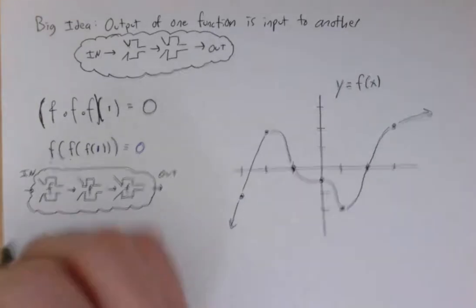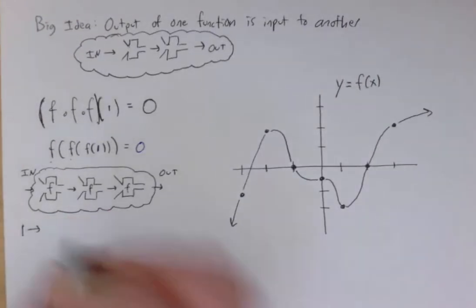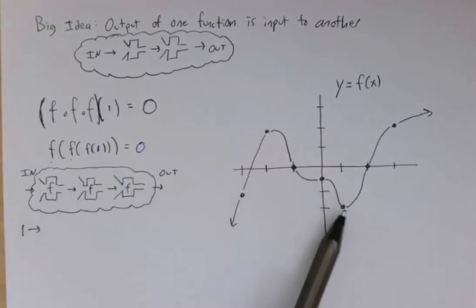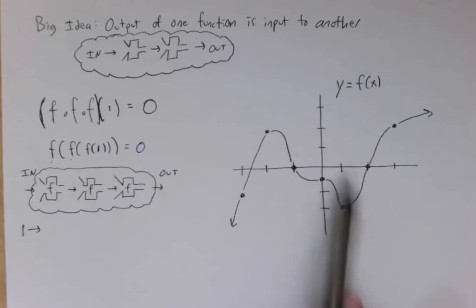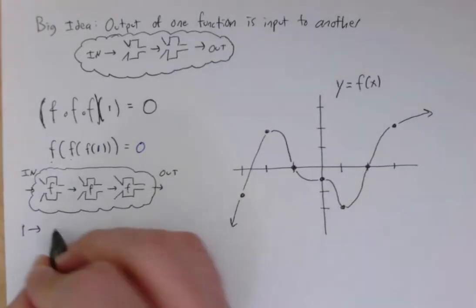And I'm going to send 1 in as the input. And we can use the graph to figure out what is the output from f of x when the input is 1. So here's an input of 1. I see the output is negative 2. Alright.